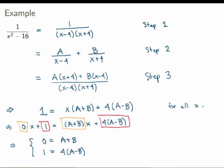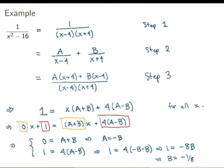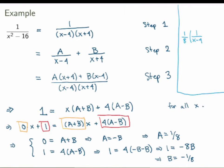This is a system of two equations for two unknowns. The first equation tells me a equals minus b. Substituting into the second: 1 equals 4 times (minus b minus b), which is 1 equals minus 8b, so b equals minus 1 over 8. Substituting back, a equals 1 over 8. So the final partial fraction decomposition is 1 over 8 times 1 over (x minus 4), minus 1 over 8 times 1 over (x plus 4) — exactly the result from the previous video.